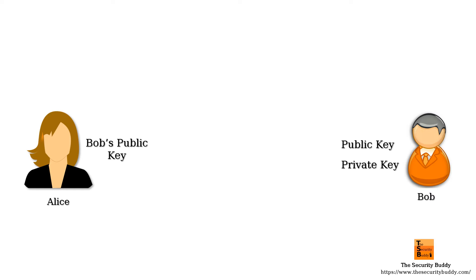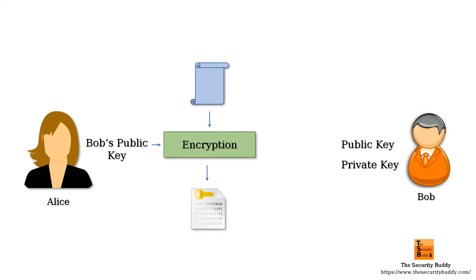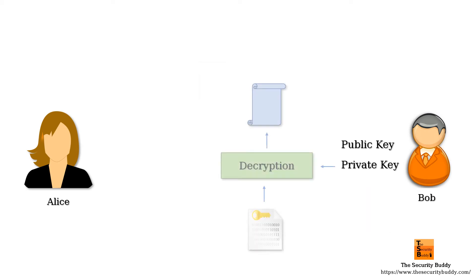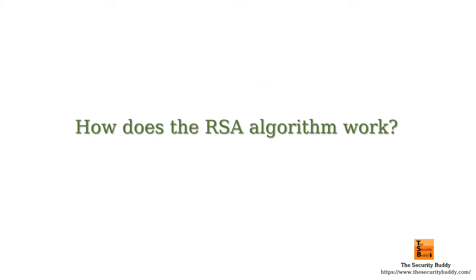Alice can now encrypt a message using Bob's public key and send it to Bob. Bob can decrypt the message using his private key and read it. As Bob's private key is secret to Bob alone, no one other than Bob can decrypt and read the message.